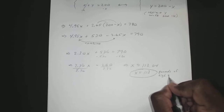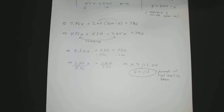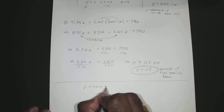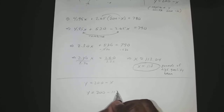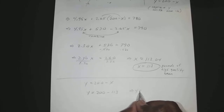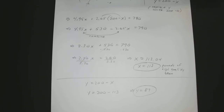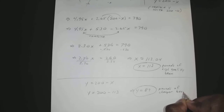So that's the pounds of the high quality bean. Now we want to find out how many pounds of the low quality bean he has to blend in. Remember, Y is just 200 minus X, so that means Y is equal to 200 minus 113, or Y is just 87. That's the pounds of the cheaper bean.